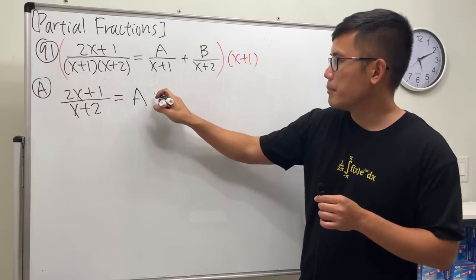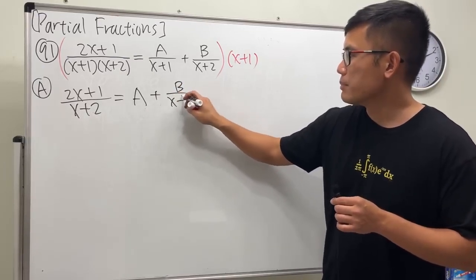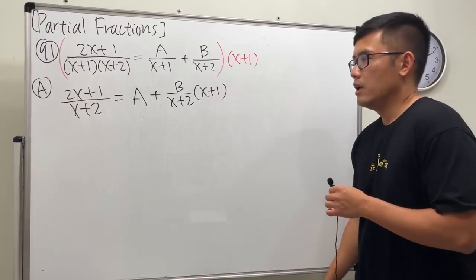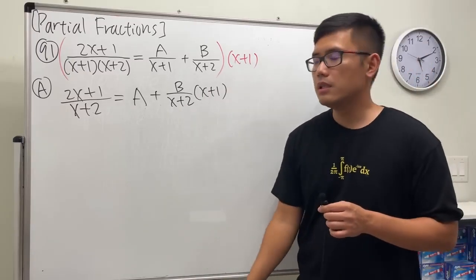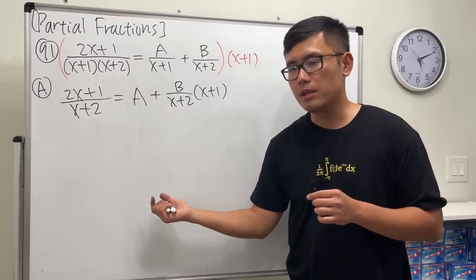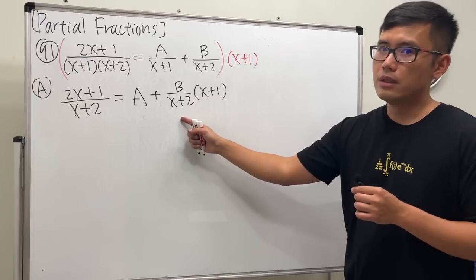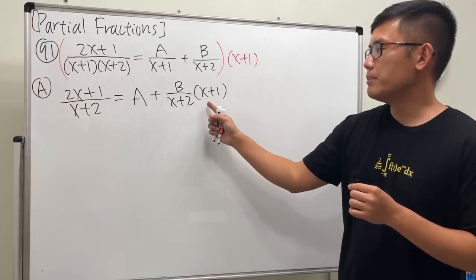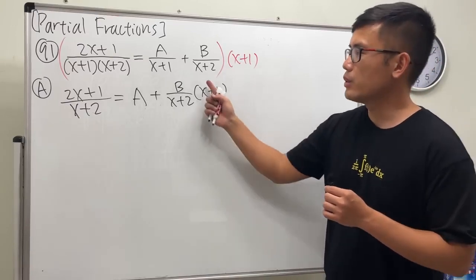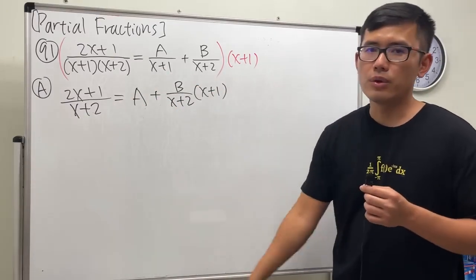They cancel already, and then plus b over x plus 2 times x plus 1. You see a is pretty much alone — it doesn't have the denominator anymore, but b does. Not only does b have the denominator, but b also has the x plus 1. If we can somehow get rid of this term, then we can get a — but how?